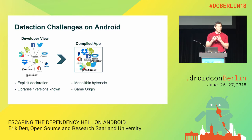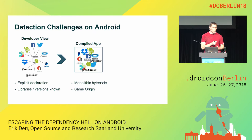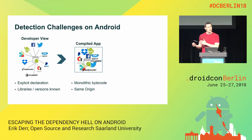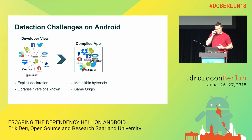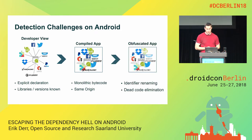This merging has severe side effects because any third-party code inherits the permissions of the host app. If the host app can access sensitive data like location or contacts, so does each and every included library. Past incidents have shown that, in particular, advertisement and tracking libraries misuse these inherited access rights to stealthily exfiltrate personal user data.